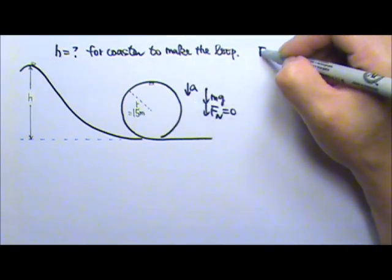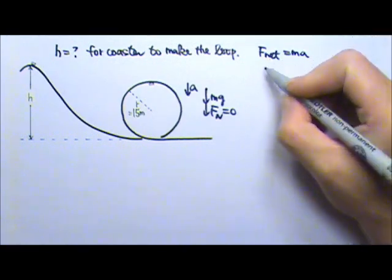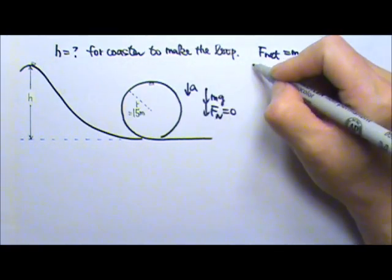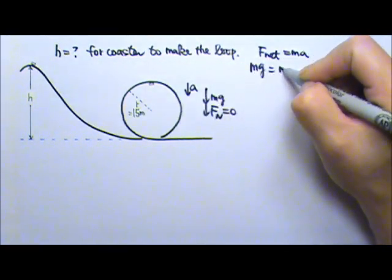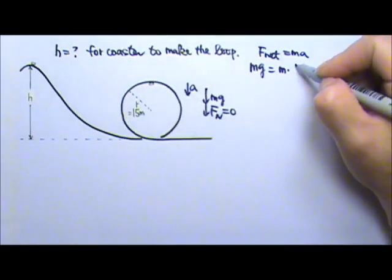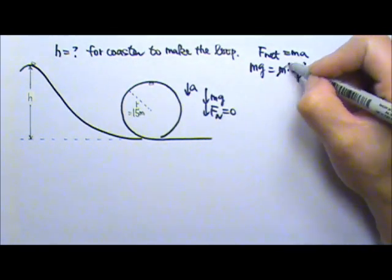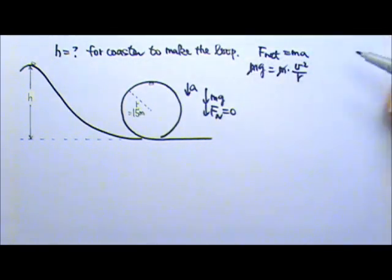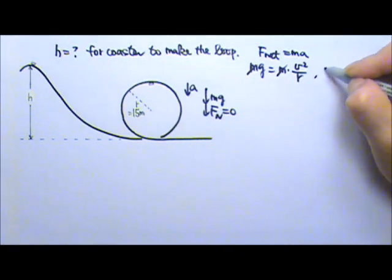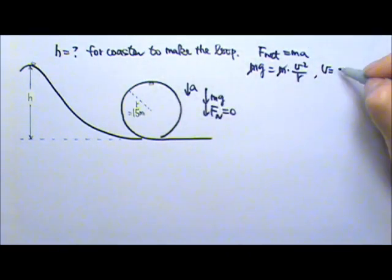And so when I write the net force equals ma, the net force would be the mg only. And that equals ma, the centripetal acceleration for circular motion, that's v² over r for acceleration. The mass does not matter. And that means the velocity at the highest point has to be square root of gr.